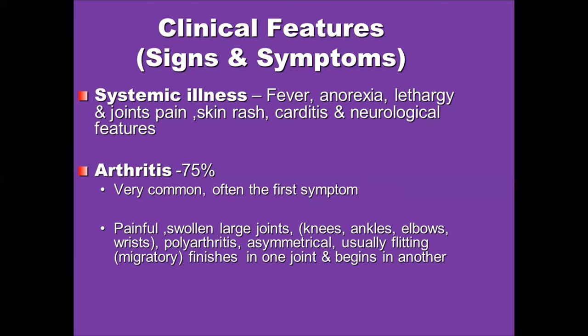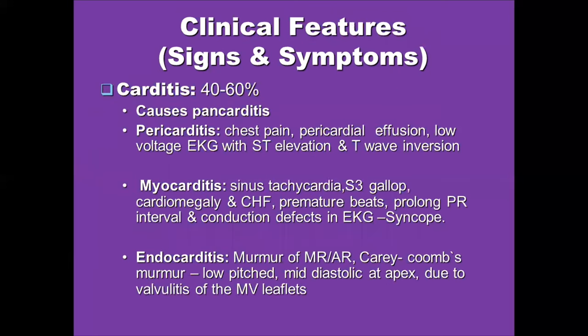The next common presentation is carditis. Acute rheumatic fever can cause pancarditis. Pericarditis presents with chest pain, pericardial effusions, low-voltage ECG with ST elevation and T-wave inversion. Myocarditis presents with sinus tachycardia, S3 gallop, cardiomegaly, and premature beats. Endocarditis presents with mitral regurgitation, aortic regurgitation, or the Carey Coombs murmur, which is a mid-diastolic murmur due to valvulitis of the mitral valve.